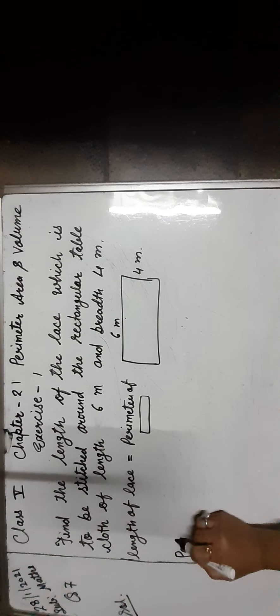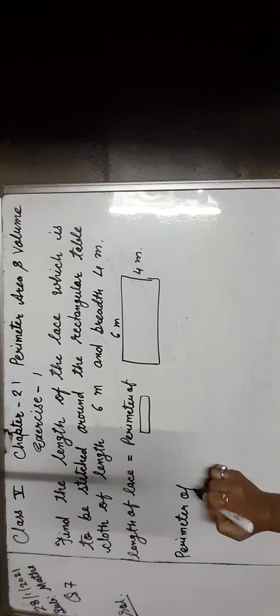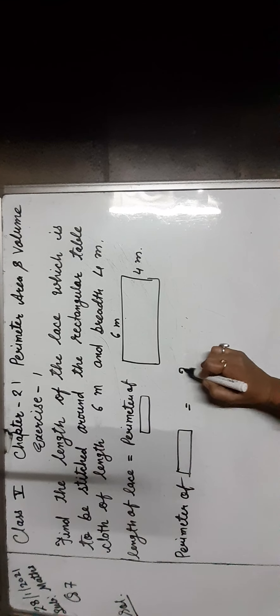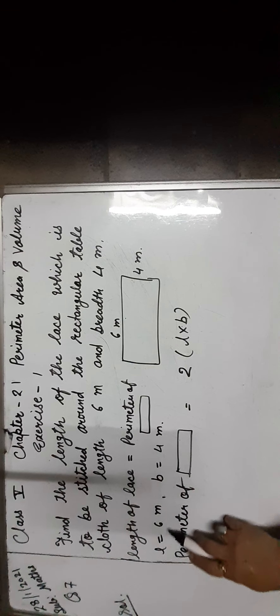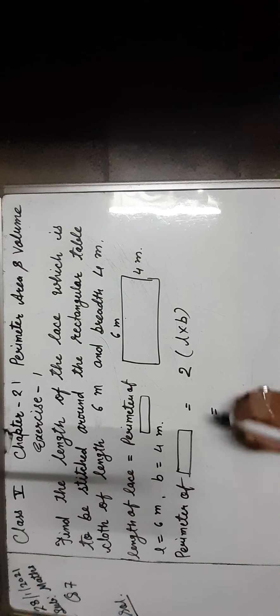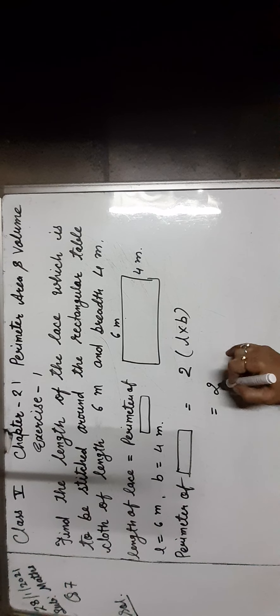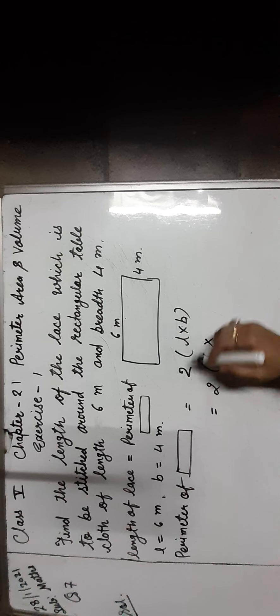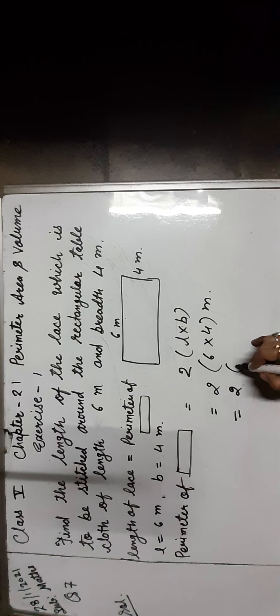We know perimeter of a rectangle is equal to 2 into (length + width). Here, length is equal to 6 meters and breadth is equal to 4 meters. Putting the values: 2 into (6 + 4) is equal to 2 into 10 meters. Now, multiply 10 by 2, which is equal to 20 meters. The perimeter of the rectangular table is equal to 20 meters.